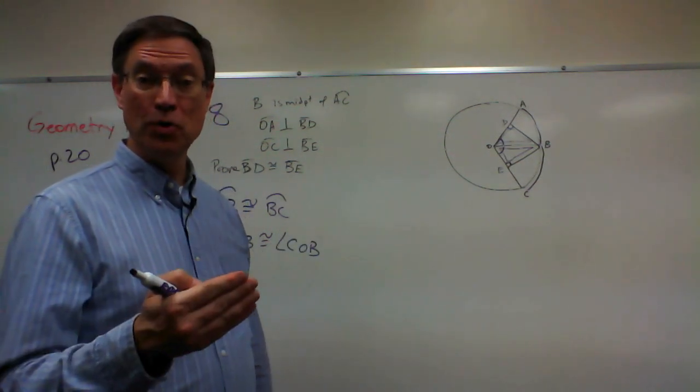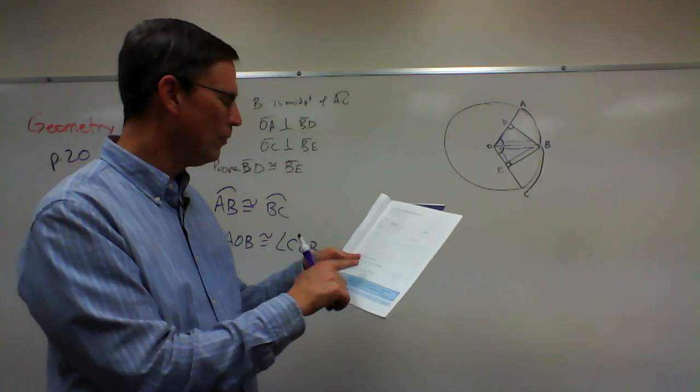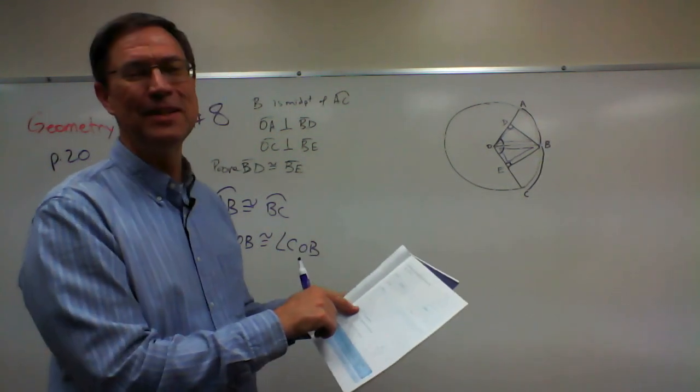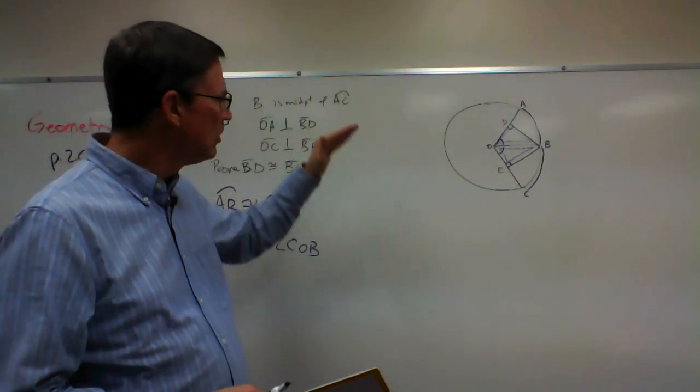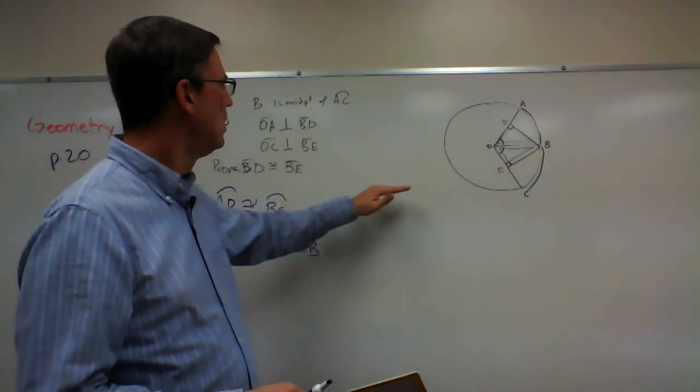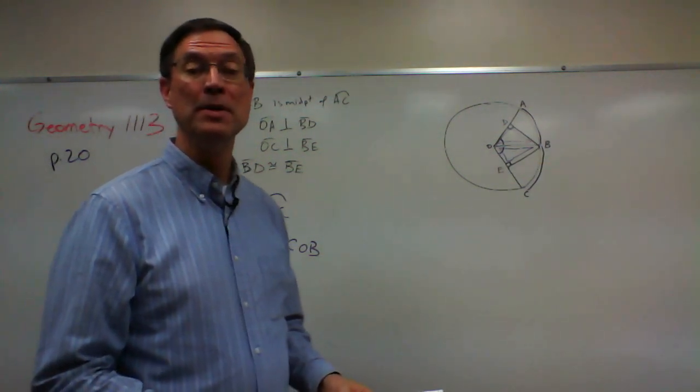Once you've proven that the triangles are congruent, then—wow, they even tell you—use CPCTC for your last step. Alright, we're practically done. You just do the formal proof, show the reasons over here, and hopefully you can finish this one up easily enough.